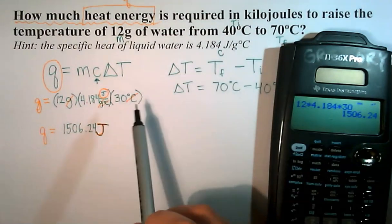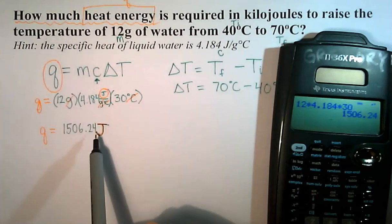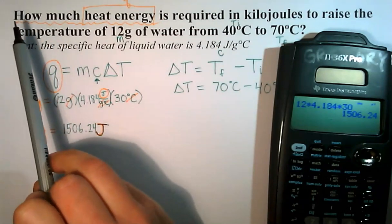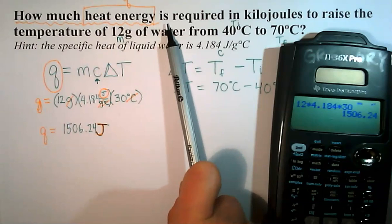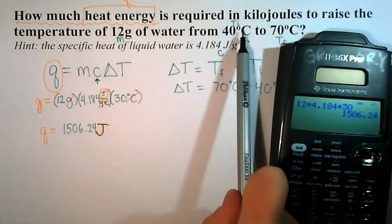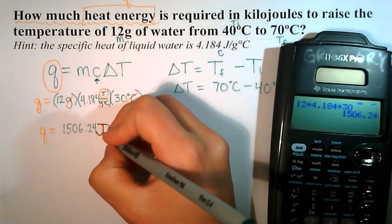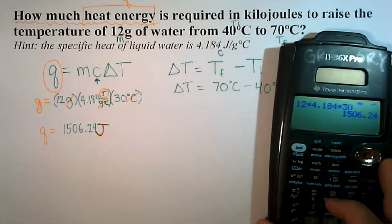Last but not least, we need to look and make sure that our value is in the correct unit. Our problem says how much heat energy is required in kilojoules. So we don't want our final answer to be in joules, we need to convert to kilojoules.